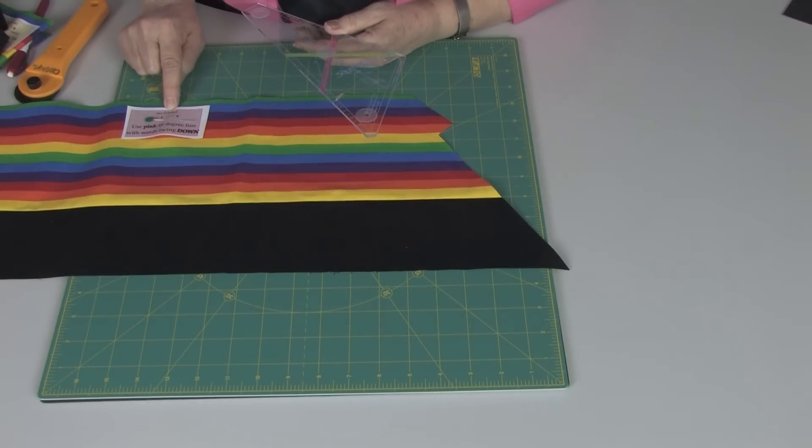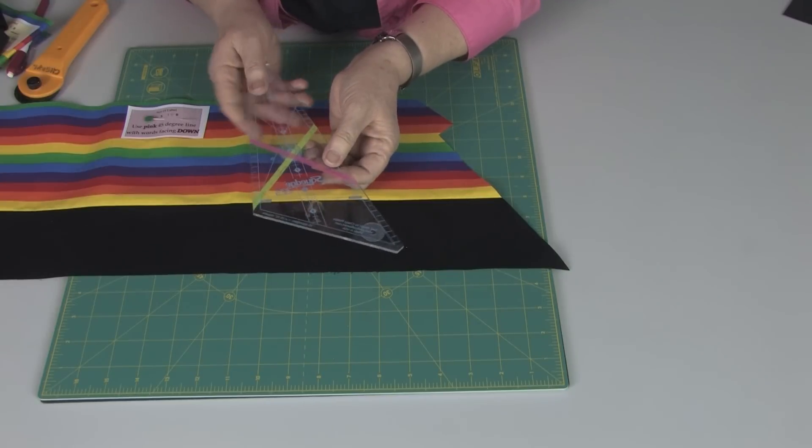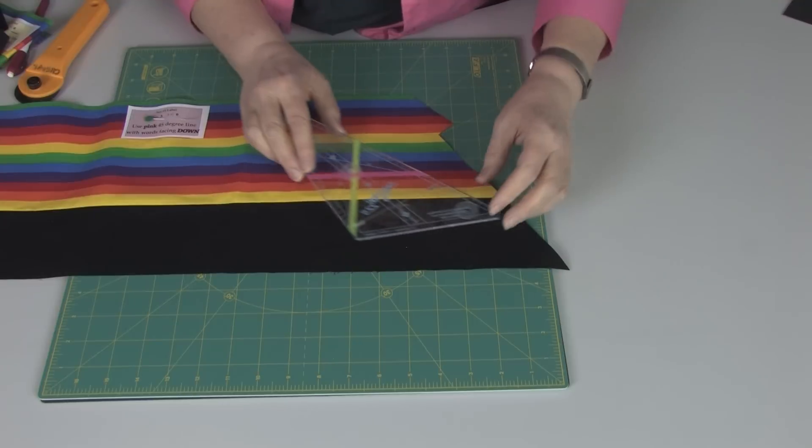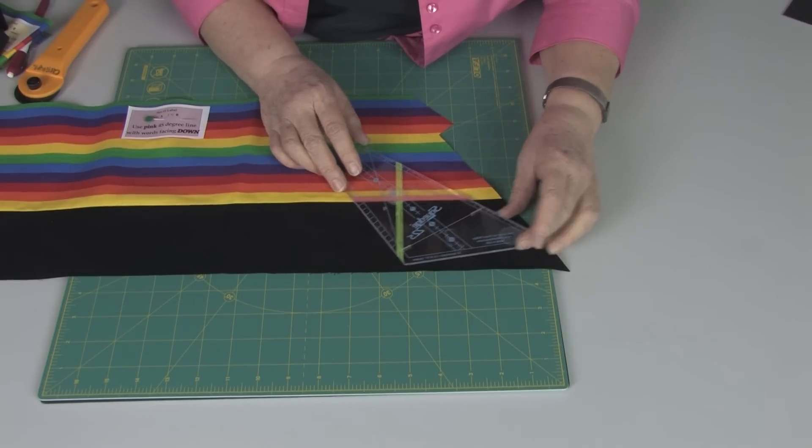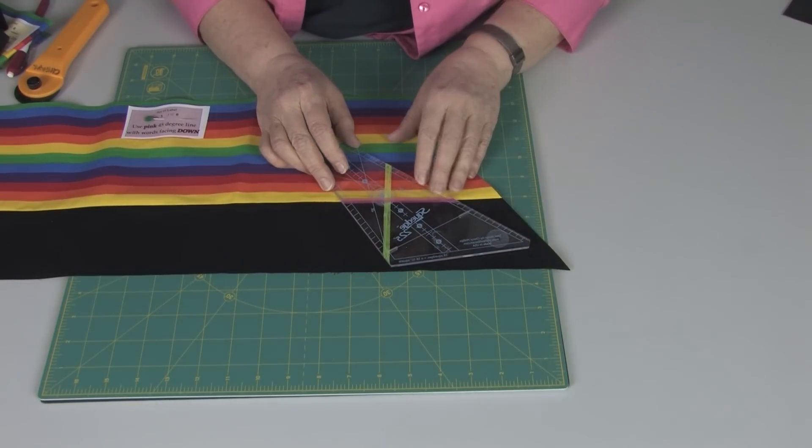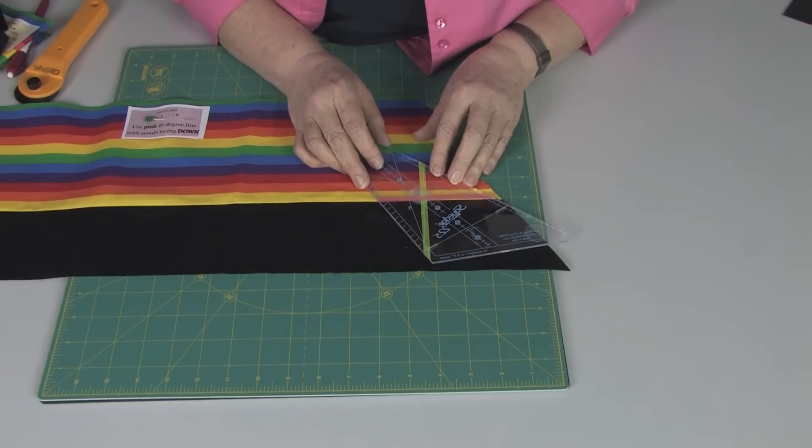This is strip set three. If we look at our label, it's a pink label. Because we're going to use the pink 45-degree line. And we're going to have the words facing down. So we'll flip it so that the words are facing down. We'll use the pink line. And you can see through that pink line the blue. And you might think you can come over here. Actually, you can push it all the way off. Because we're going to cut to the slot.